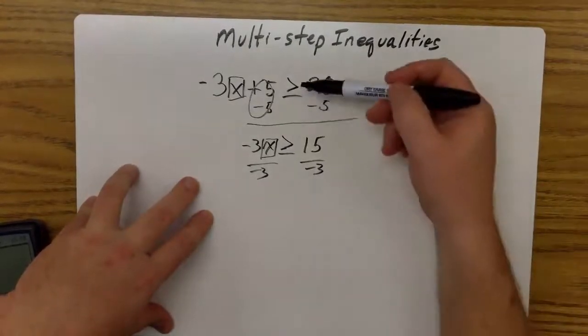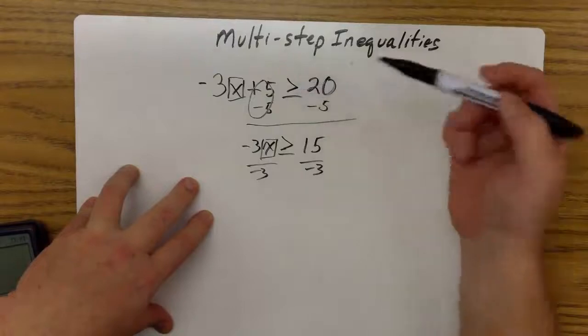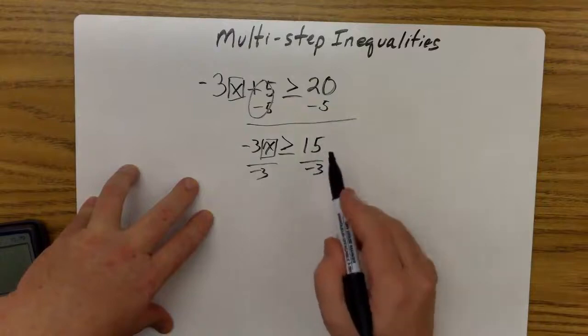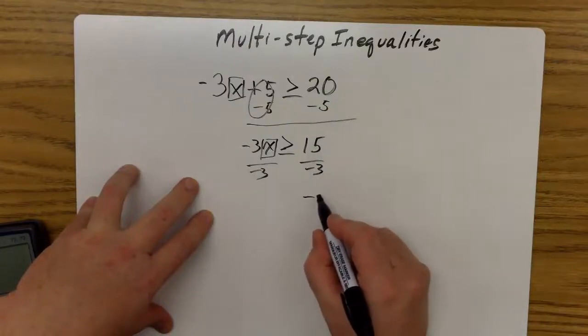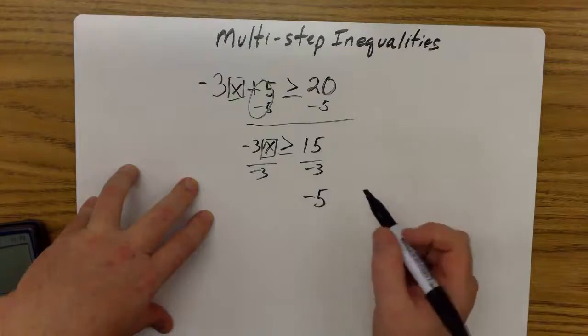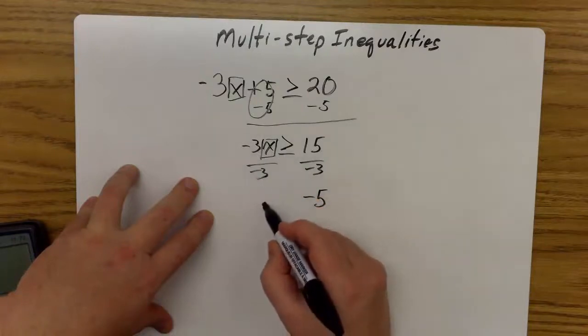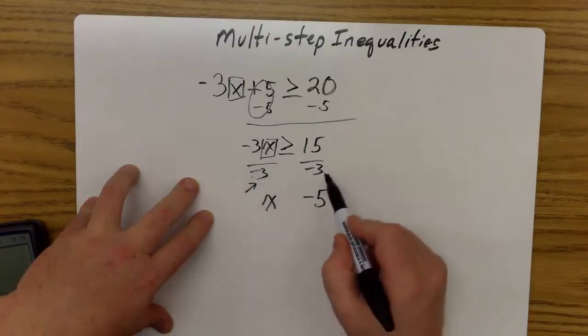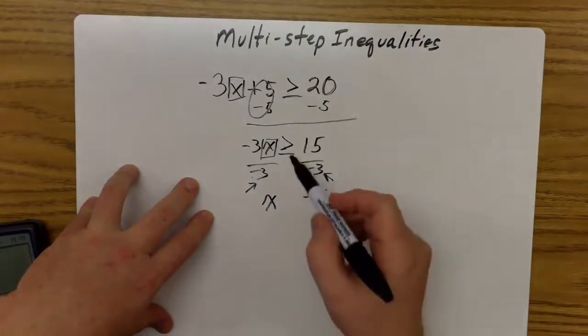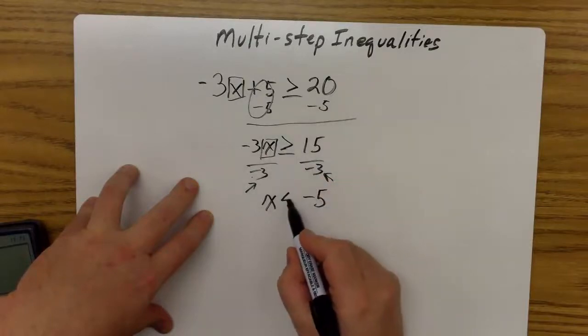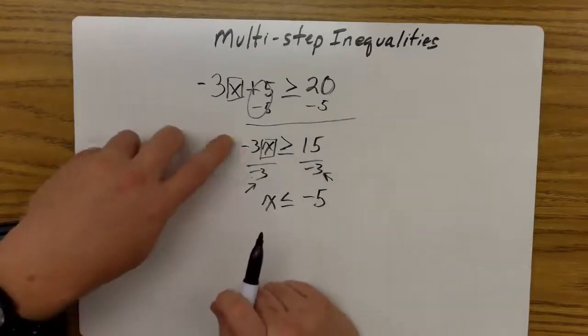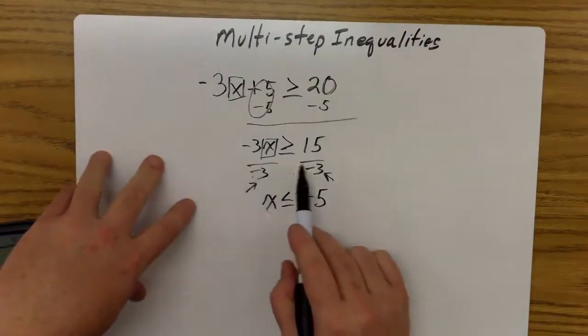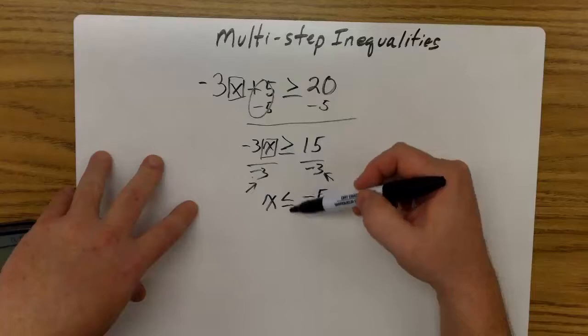Here's where the only difference between inequalities and equations comes into play. You can see I'm dividing both sides by a negative. On this side, the result is going to be -5. On this side, this is going to just be x. But the only difference is when I divide both sides by a negative, I've got to take this inequality symbol and switch it around. If that were a positive 3, this would still face the same direction.